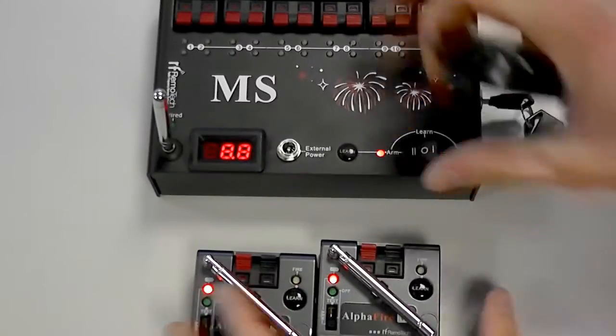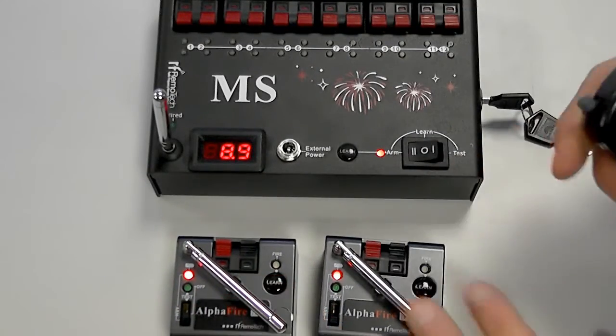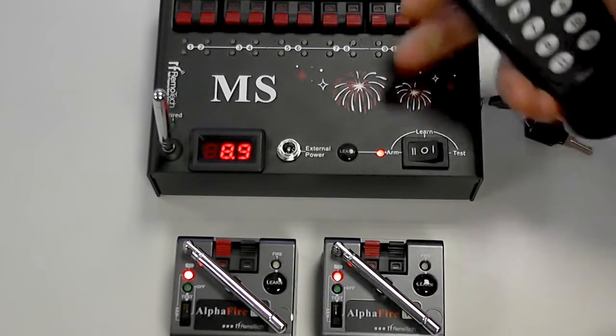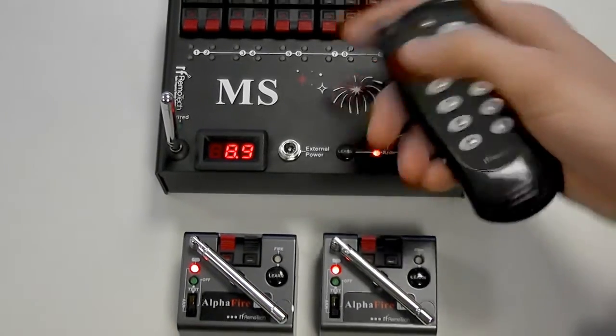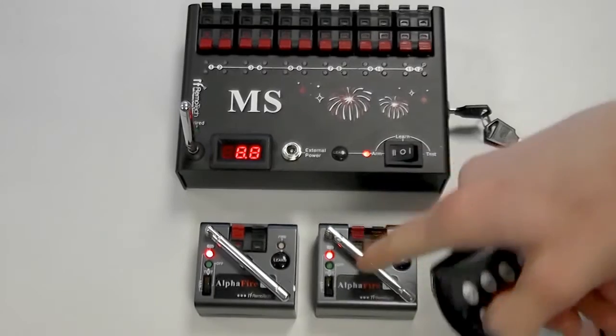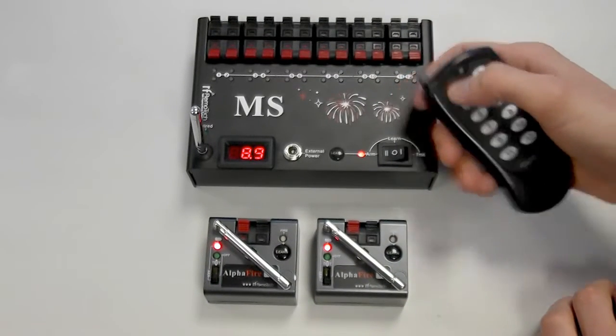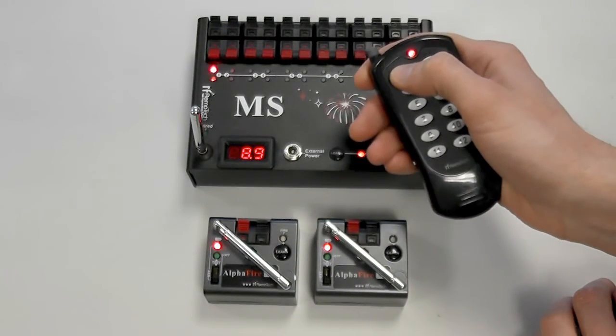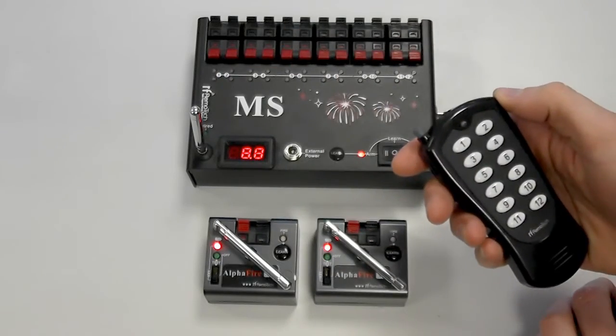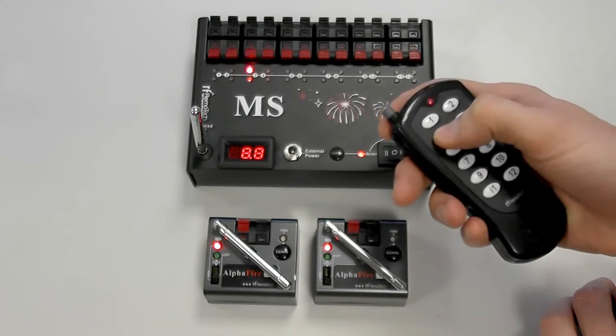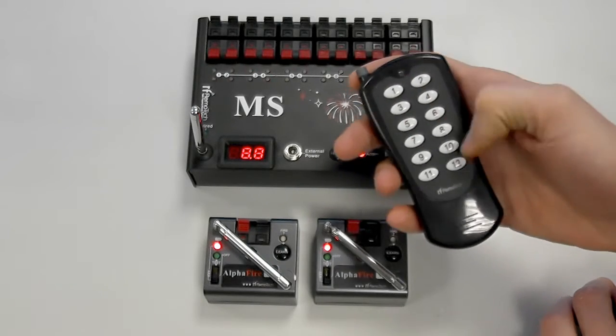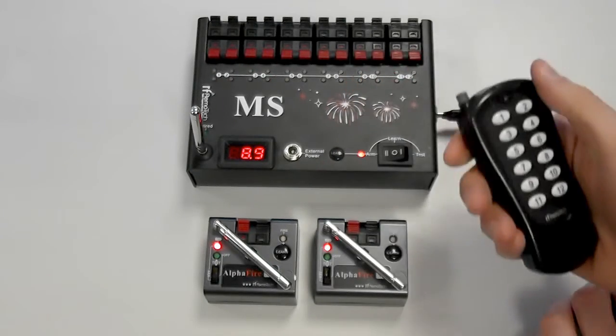So I bring all these into shot. You should now be able to see that with all the systems on arm, when I press button one, cue one will fire here and these two will also fire at the same time. Three, two, one. You can see there all three fired and you can then of course go on and use cue two, three, four, five, all the way up to twelve on the 12 key system.